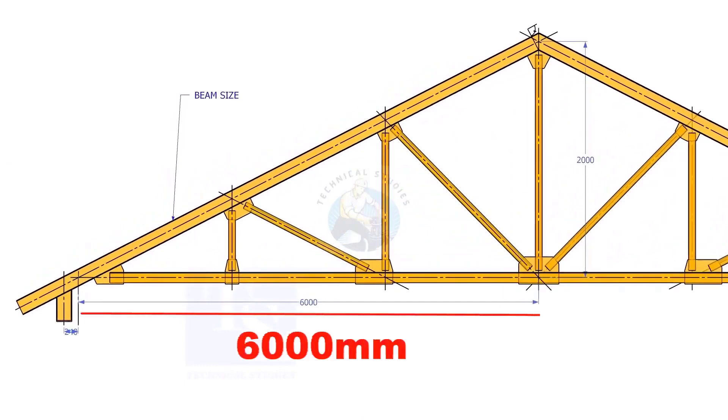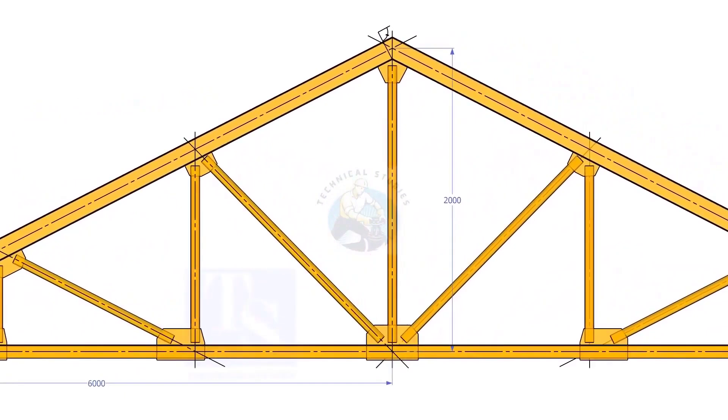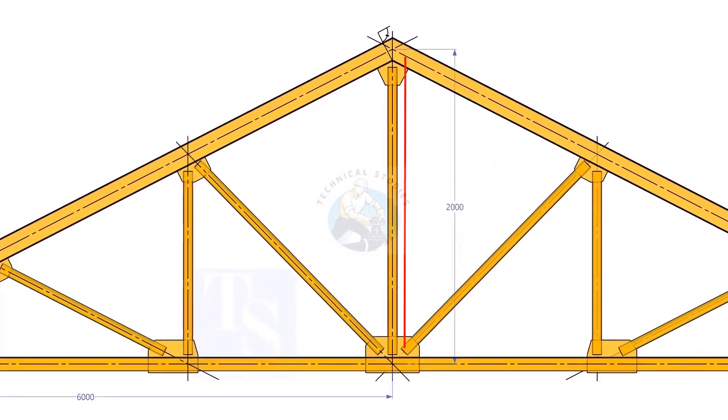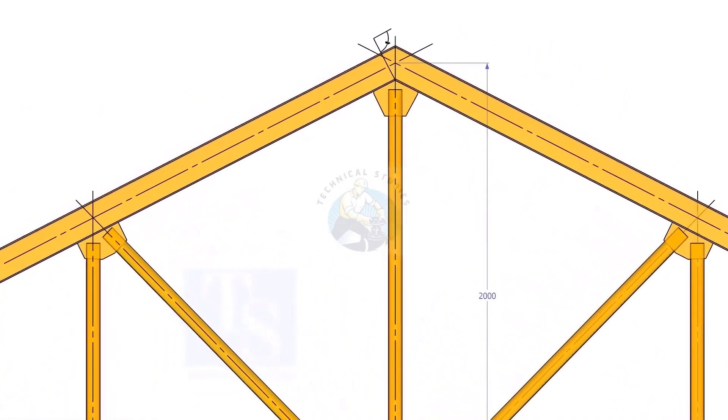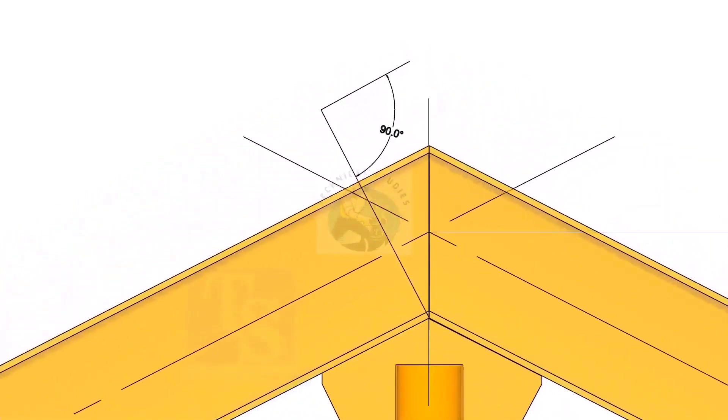Assume that the half span of a truss is 6000mm and the height of the truss is 2000mm. How to calculate the cutback of a 400mm wide girder?